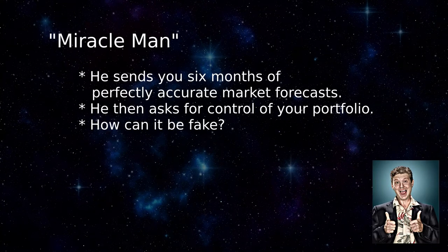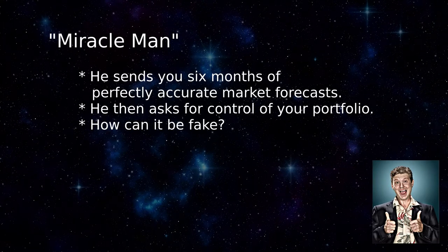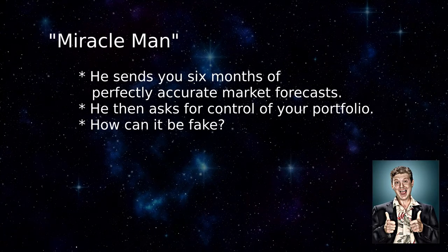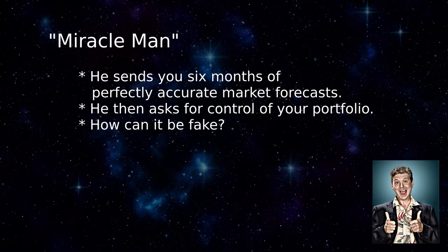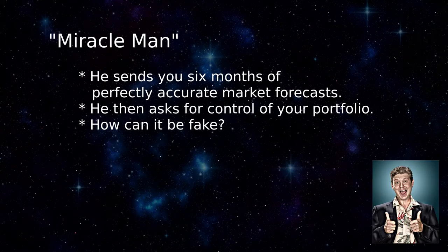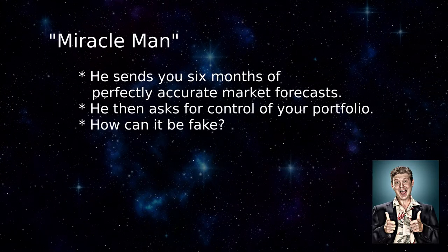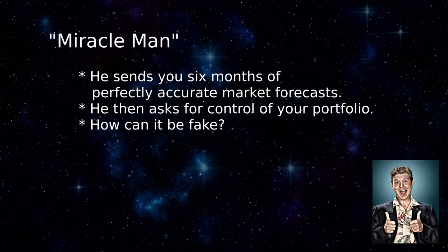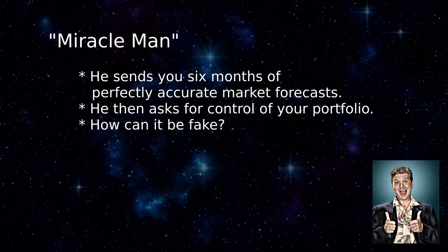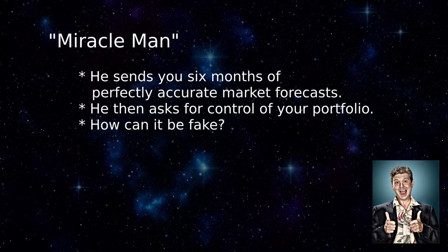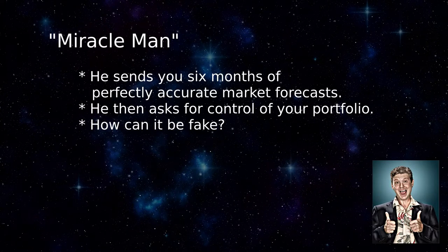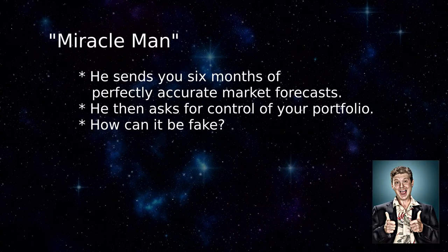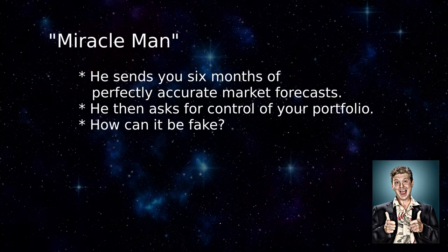On October 1st, you get a final email with another accurate prediction. But in this message, Miracleman correctly points out that if you had followed his advice, you would have made millions. And he asks for control of your portfolio. I emphasize again that this is a scam — a trick. It doesn't rely on insider information or any special knowledge of the stock market. How does Miracleman do it? How can anyone predict the entire market for six months straight with perfect reliability?